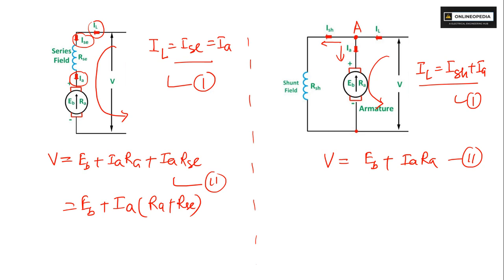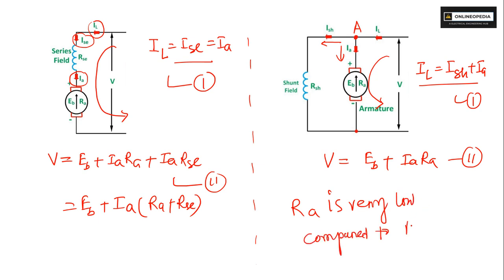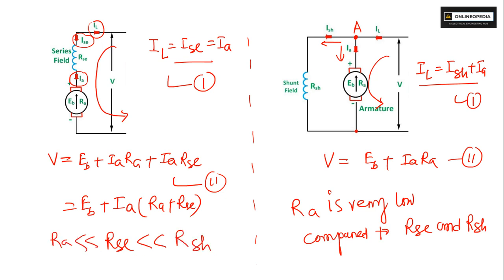One thing you should remember: Ra is very low compared to Rsc, and Rsc is also very low compared to Rsh. So the hierarchy is: Ra is much less than Rsc, and Rsc is much less than Rsh.